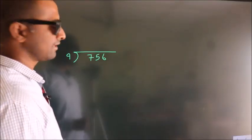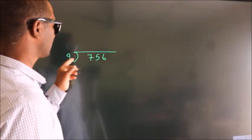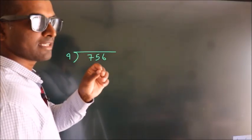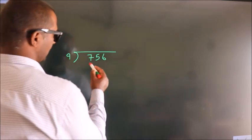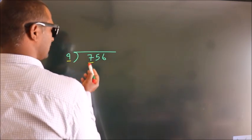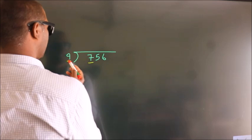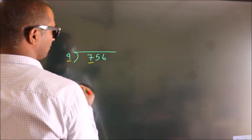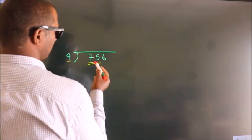How to divide 756 by 9. Here we have 7, here 9. 7 is smaller than 9, so we should take 2 numbers: 75.